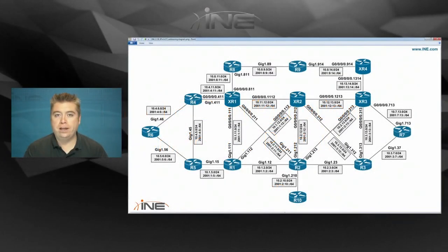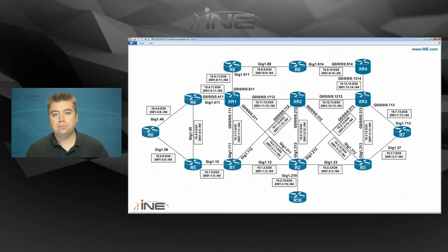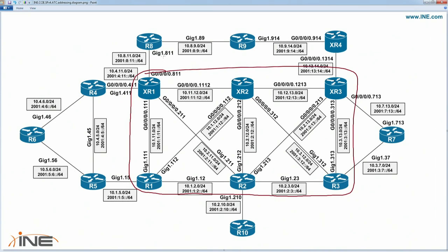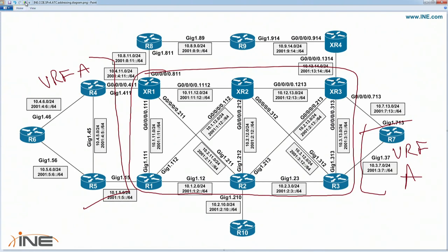Let's take a look at our configuration example for MPLS traffic engineering and first talk about the topology and what is pre-configured. The core of the network is the same as our previous examples with layer 3 VPN — six nodes: three IOS XR boxes and three regular IOS boxes. Router 1 and XR1 both have a connection to a customer running in VRF A, and from router 3 over to router 7 we have another site for VRF A. We also have two sites for VRF B, down on router 2's connection to router 10, to router 8, and to XR4.